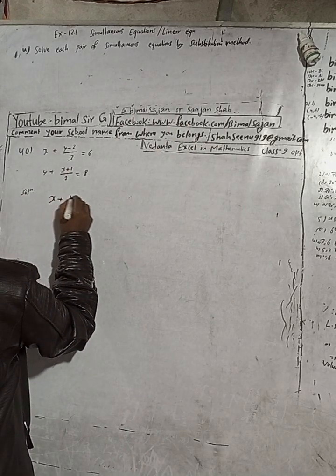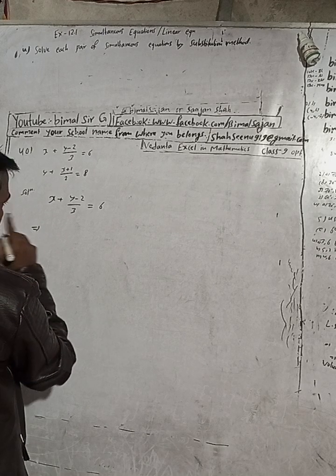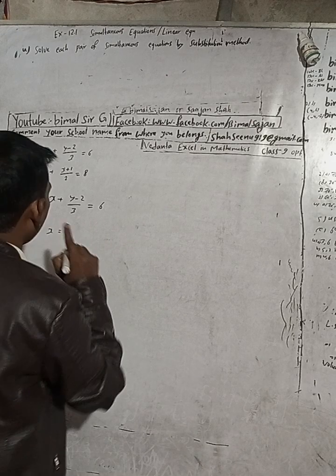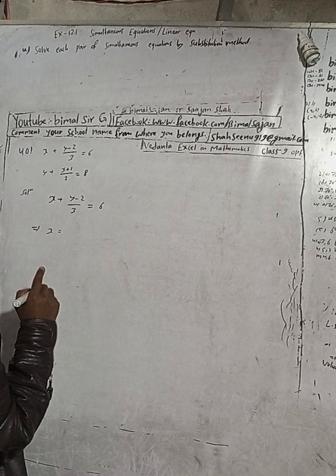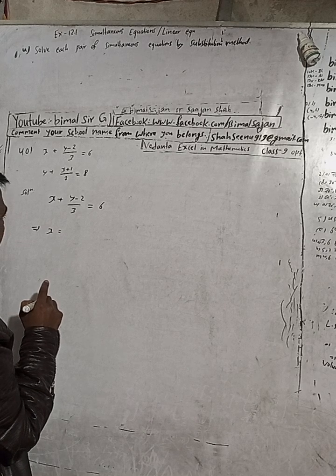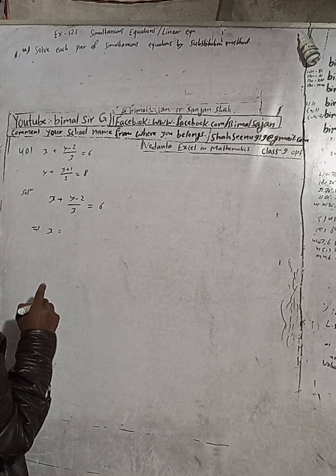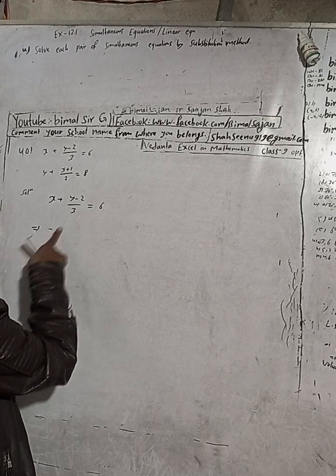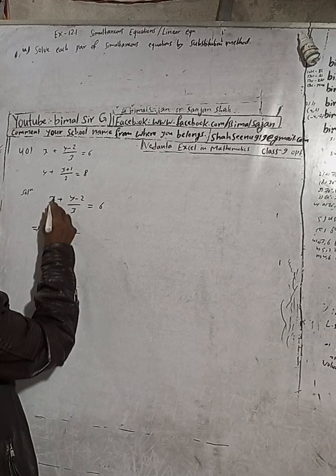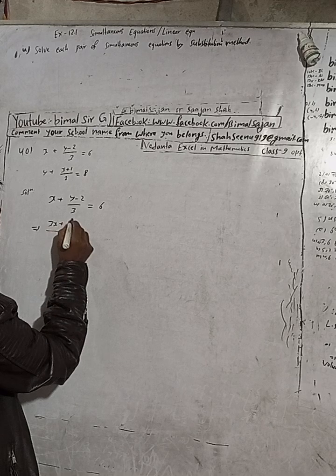Here the equations are: x plus y minus 2, all over 3, is equal to 6. You can solve this for x. An easy method is to multiply — take LCM here. This LCM is 3, so multiply through by 3: this gives 3x plus y minus 2. No bracket needed here since it's plus; a bracket would only be necessary if it were minus.